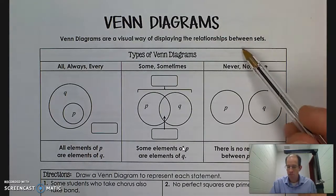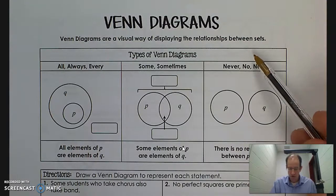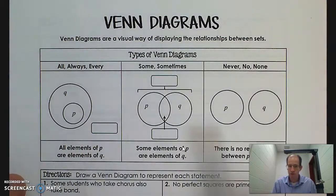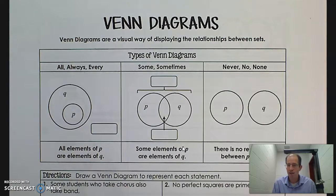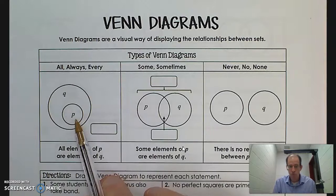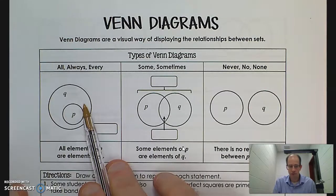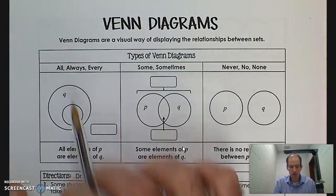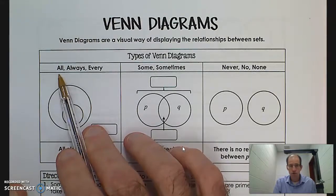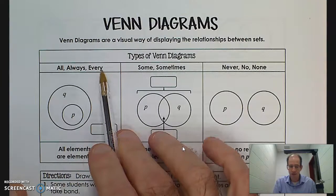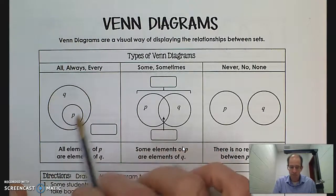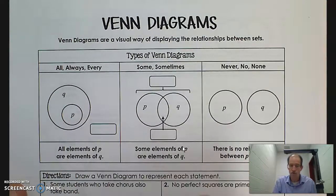Venn diagrams are a visual way of displaying the relationship between sets. There are three possible scenarios. In the first scenario, I'm going to be drawing circles that represent the different statements. I'll draw one circle contained within another circle. In this situation, you'll be using the words all, always, or ever. So if you see these words in a sentence, I'll probably be drawing a circle within another circle.